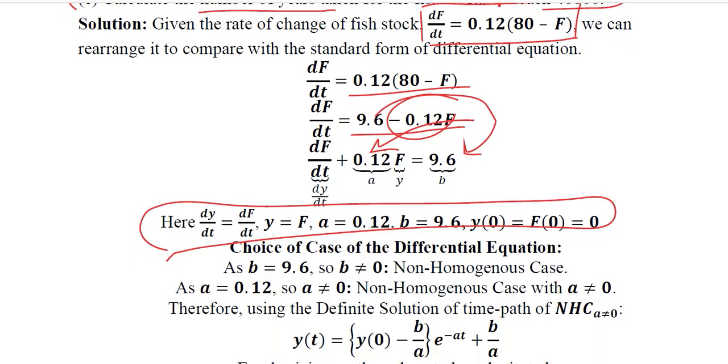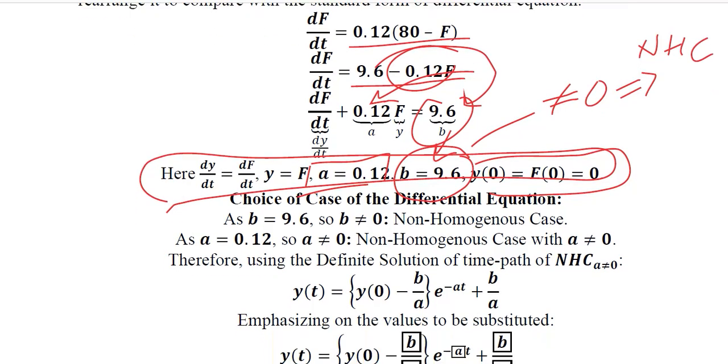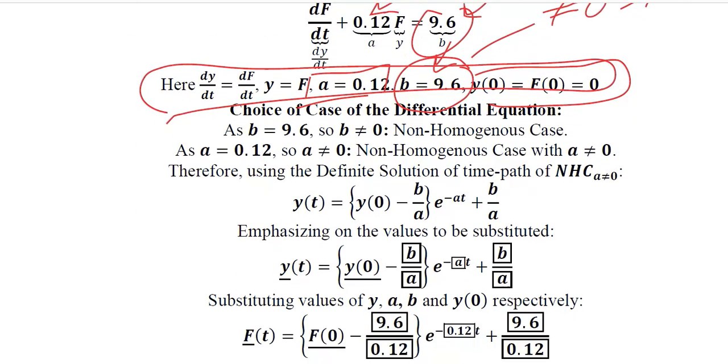These values show that B equals 9.6 which is not equal to 0, which means we have a non-homogeneous case. There are no fishes when there is no time spent and the initial condition equals 0 numerically, and A is non-zero. So in light of the given data, we have a non-homogeneous case where A is not equal to 0.